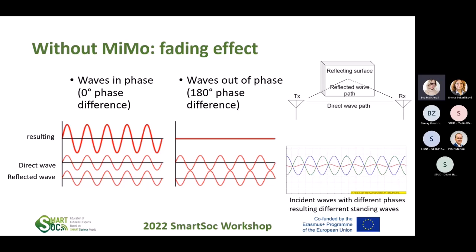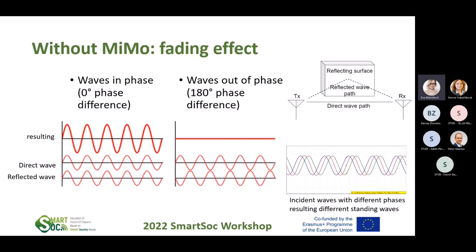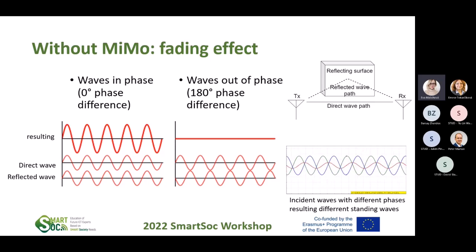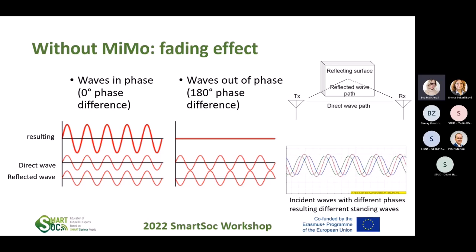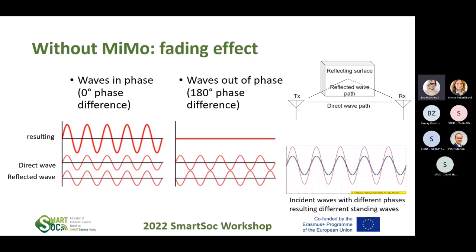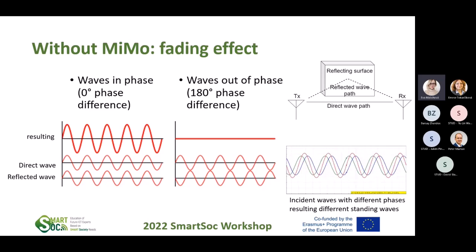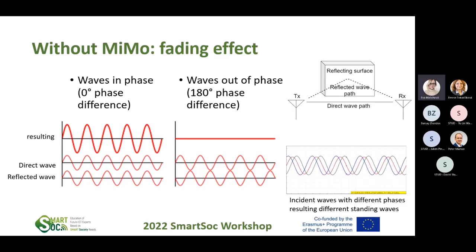This is the fading effect. If waves from the same source travel two different paths and meet 180 degrees out of phase, they nullify each other. If your car is in this area, you cannot get a good reception. But if I have not only one path but many more — like MIMO — I can get better reception. When the signal-to-noise ratio is low, the receiver can almost recognize the information. With MIMO, the signal-to-noise ratio improves and the information decoding improves.